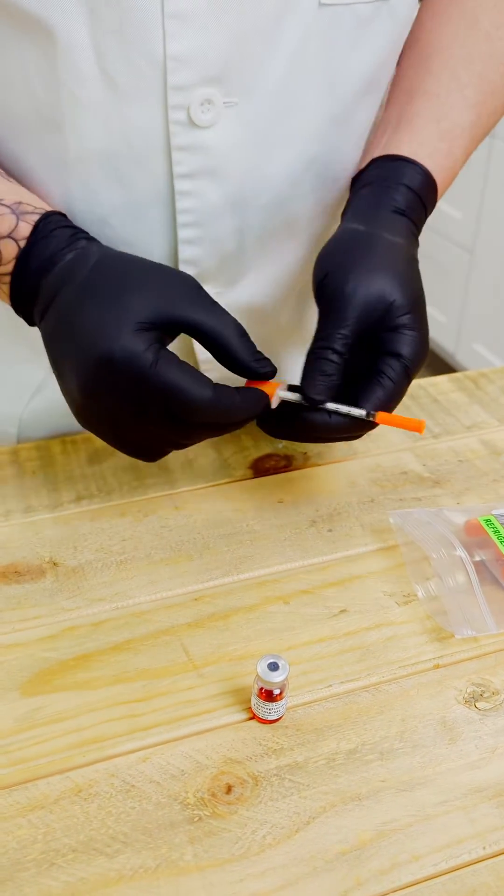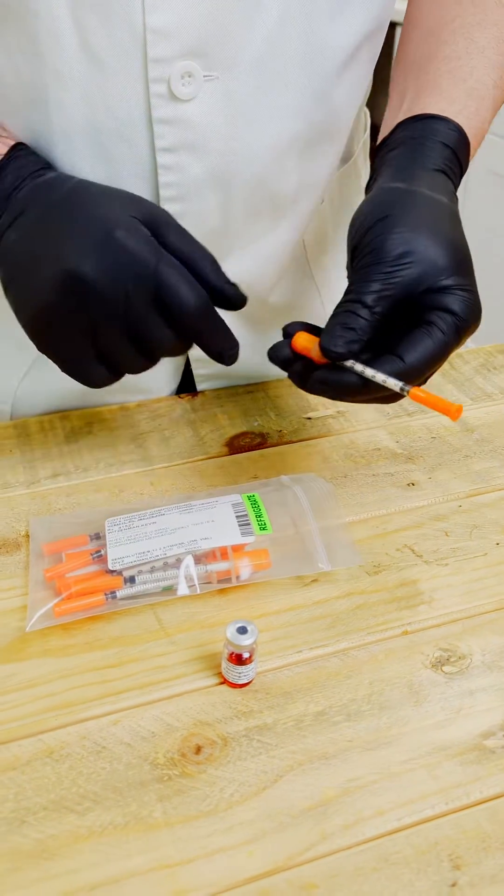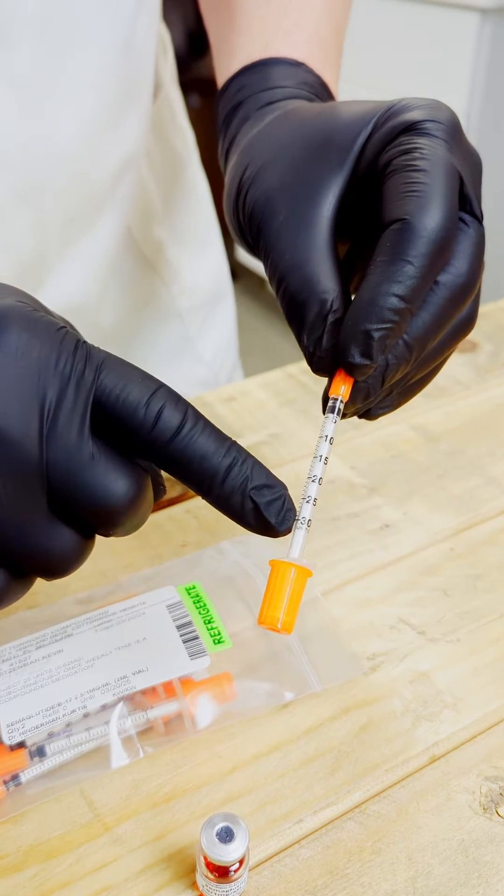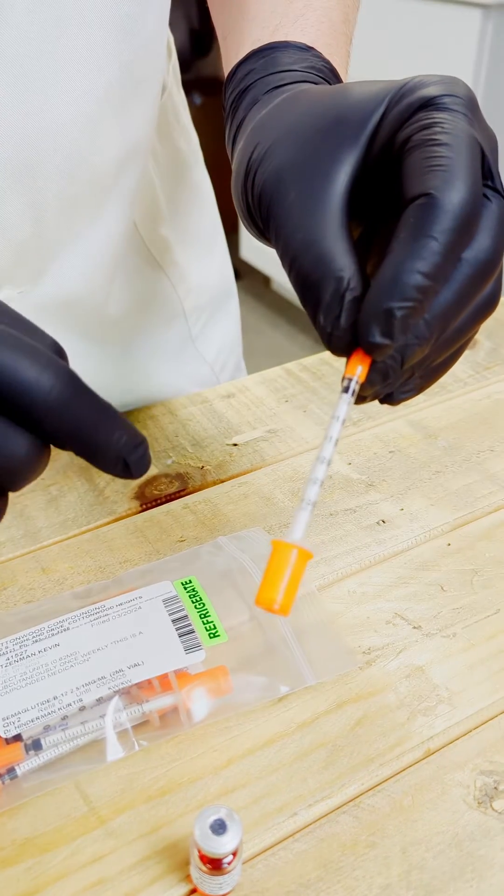Next what we want to do is, as you remember, on the prescription itself it says we were injecting 25 units. On the syringe we have a 30 unit syringe. They come in 30 unit, 50 unit, and 100 unit.